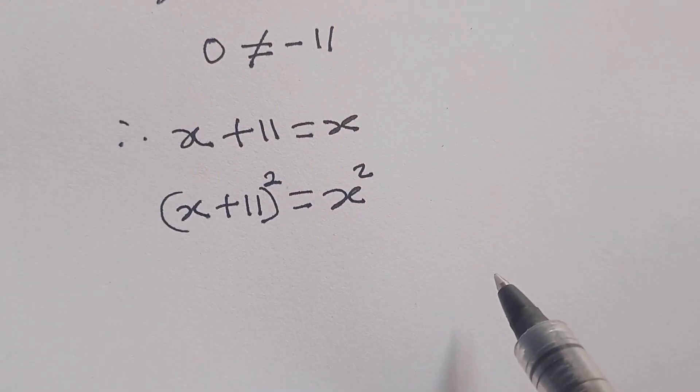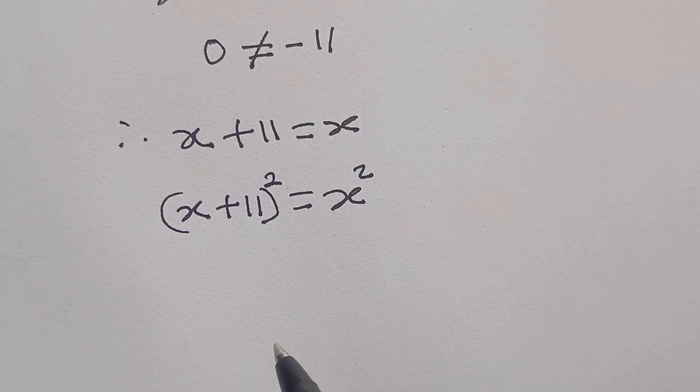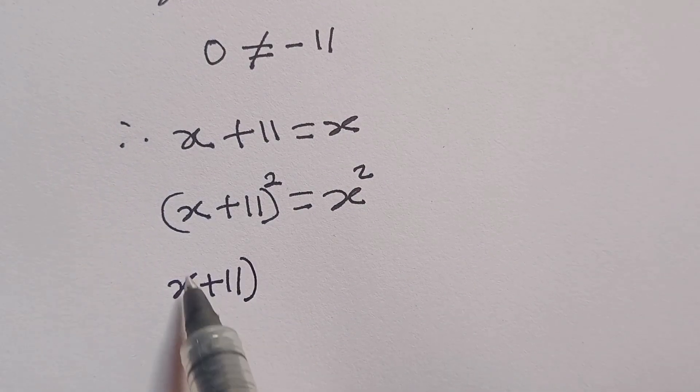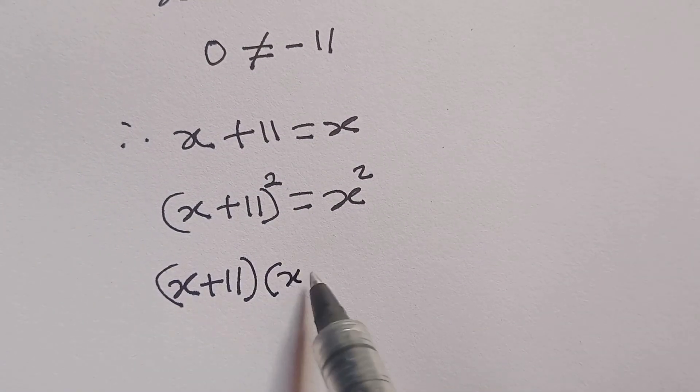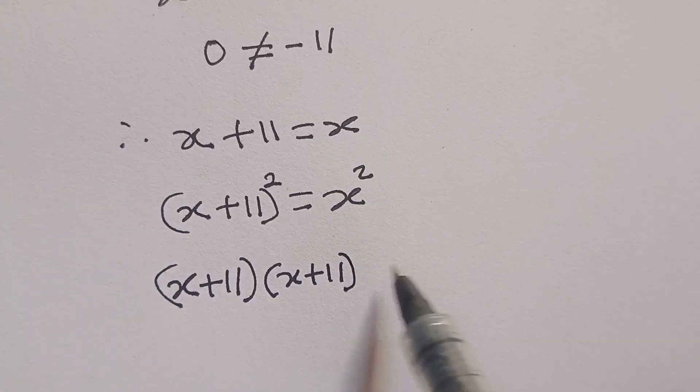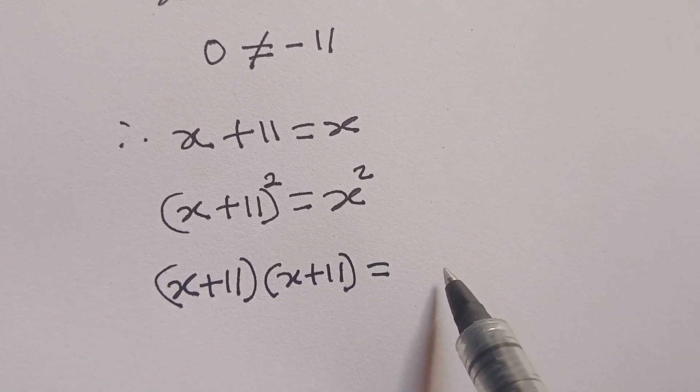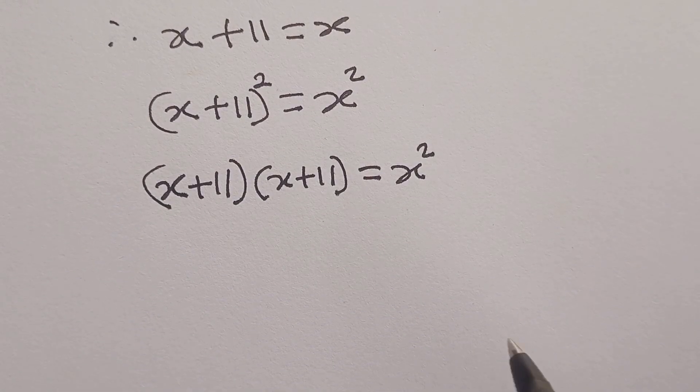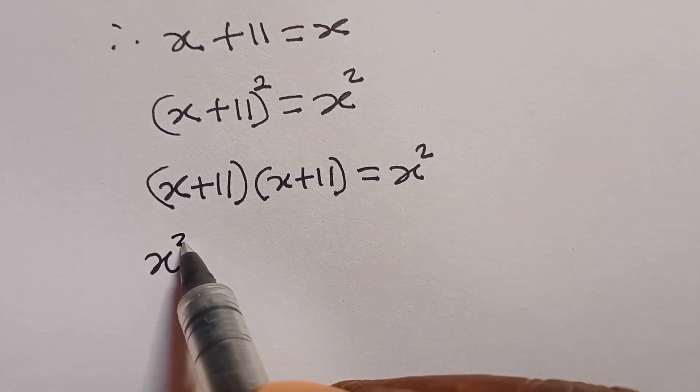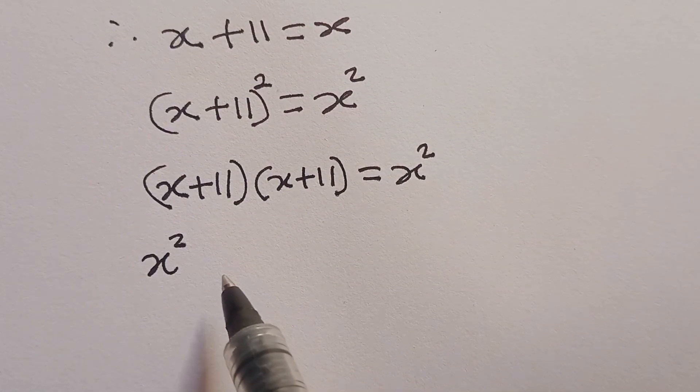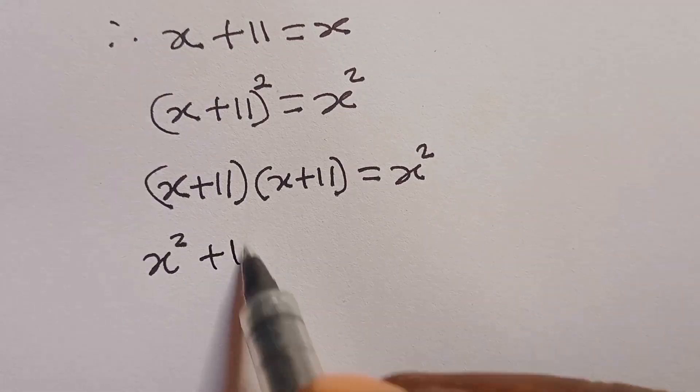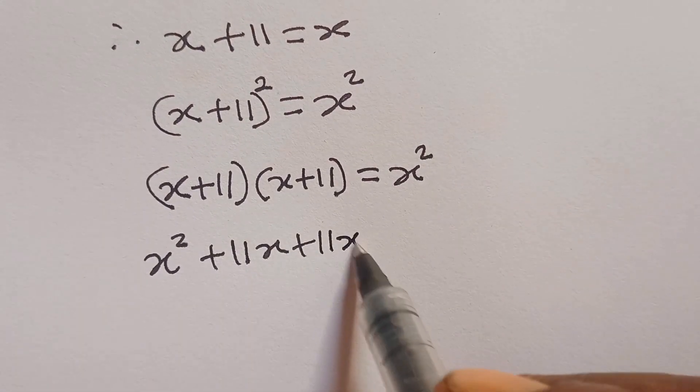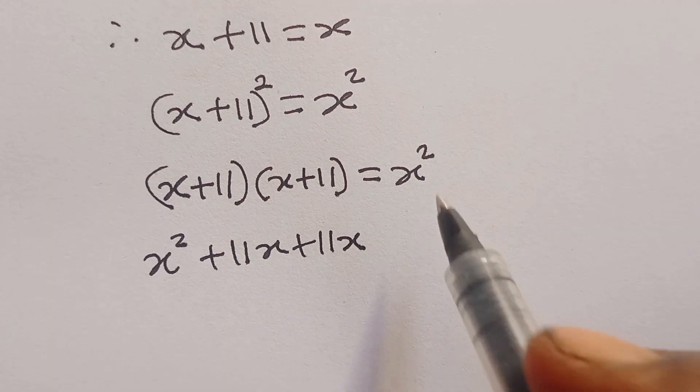In squaring both sides, I will be having x plus 11, everything squared, going to x squared. So, x plus 11 in the bracket times x plus 11. If I open what I have at my left hand side, I will now be having x squared plus 11x plus 11x plus 121.